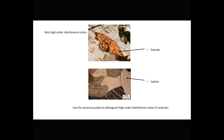If we're confused about whether interference colors are very high washed-out pastels or are white, we can insert the accessory plate. When we insert the accessory plate, we add retardation. If the minerals already have great retardation, interference colors will not change when we put in the accessory plate. But if we're looking at something with white or gray interference colors and we put in the accessory plate, the colors will change to higher order.